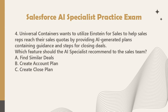Question 4: Universal Containers wants to utilize Einstein for Sales to help sales reps reach their sales quotas by providing LLM-generated plans containing guidance and steps for closing deals. Which feature should the AI specialist recommend to the sales team? A. Find similar deals. B. Create account plan. C. Create close plan.